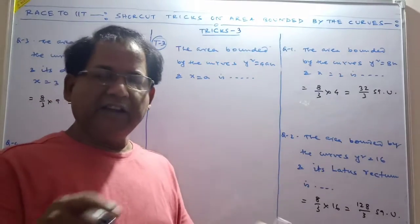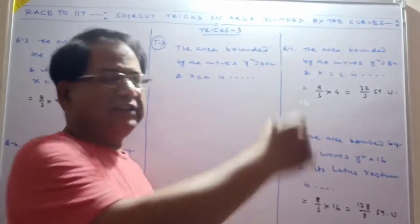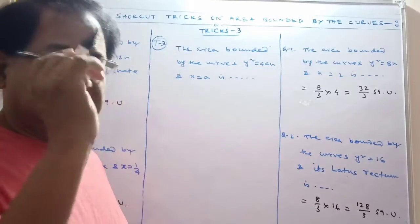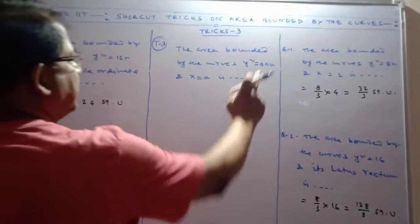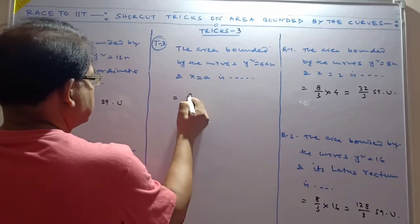Without opening your pen or book, you can find out the area for such type of questions. Just tick the right one. The area bounded by the curves y² = 4x and x = a, that is 8/3 a^(3/2).